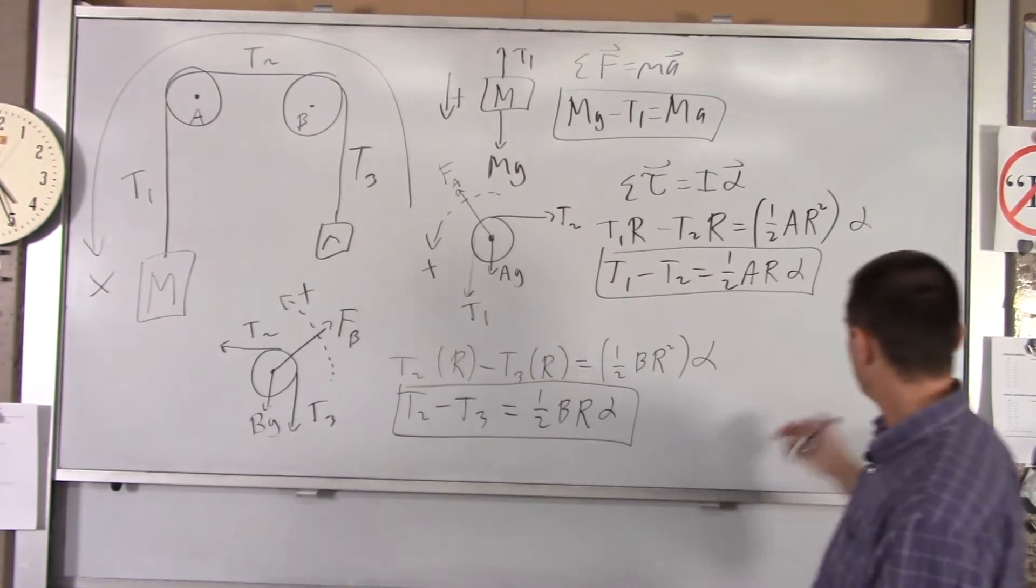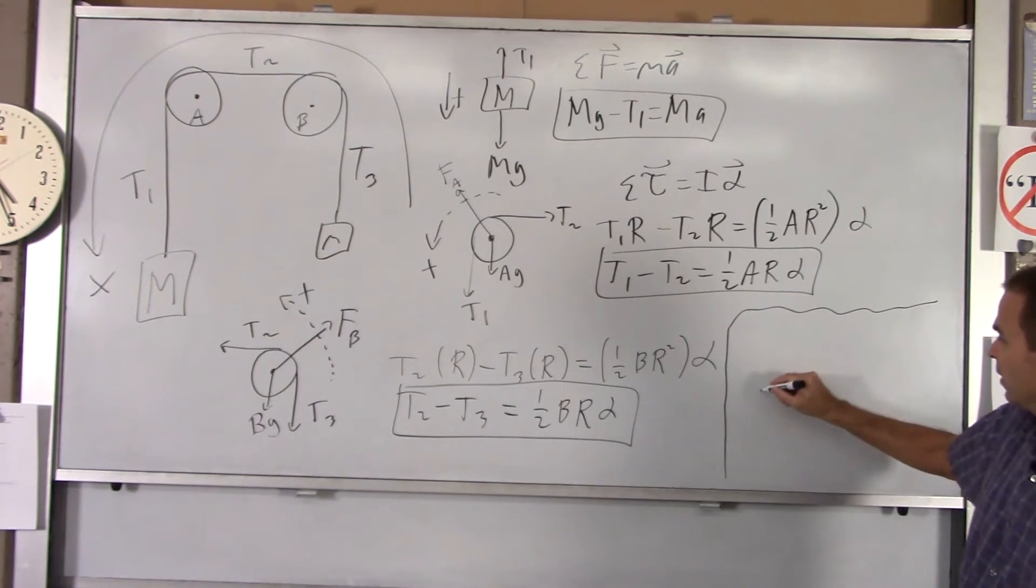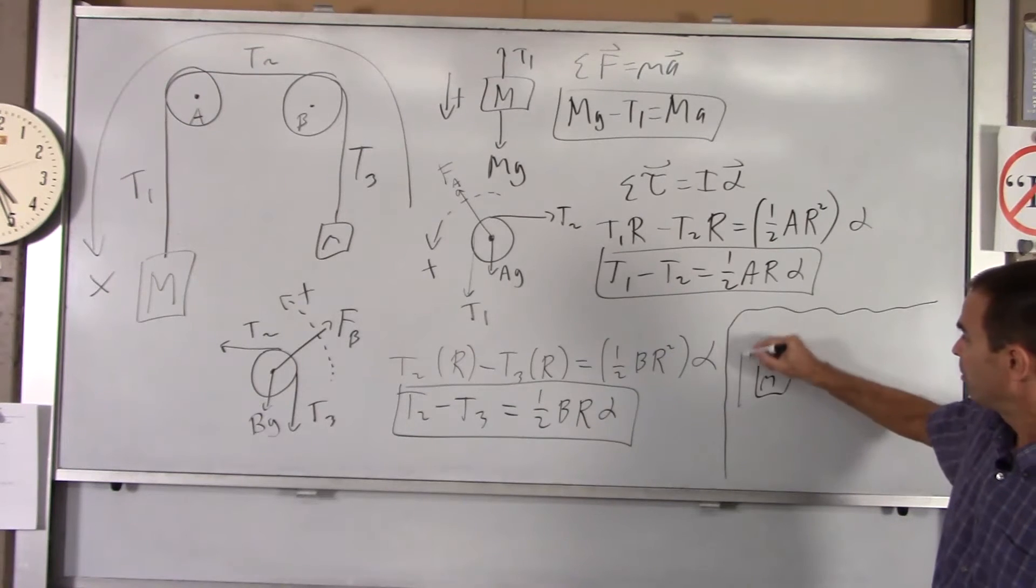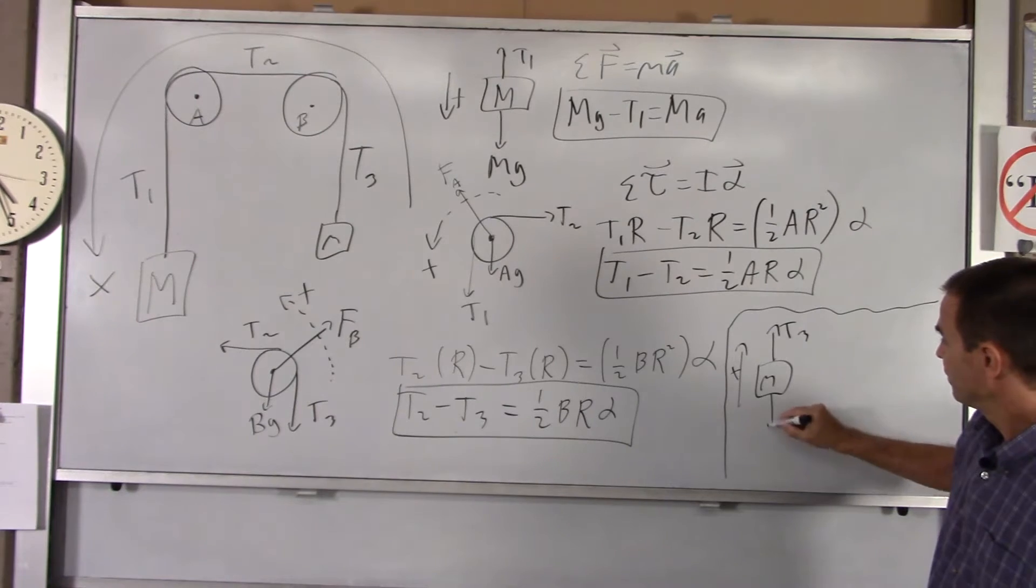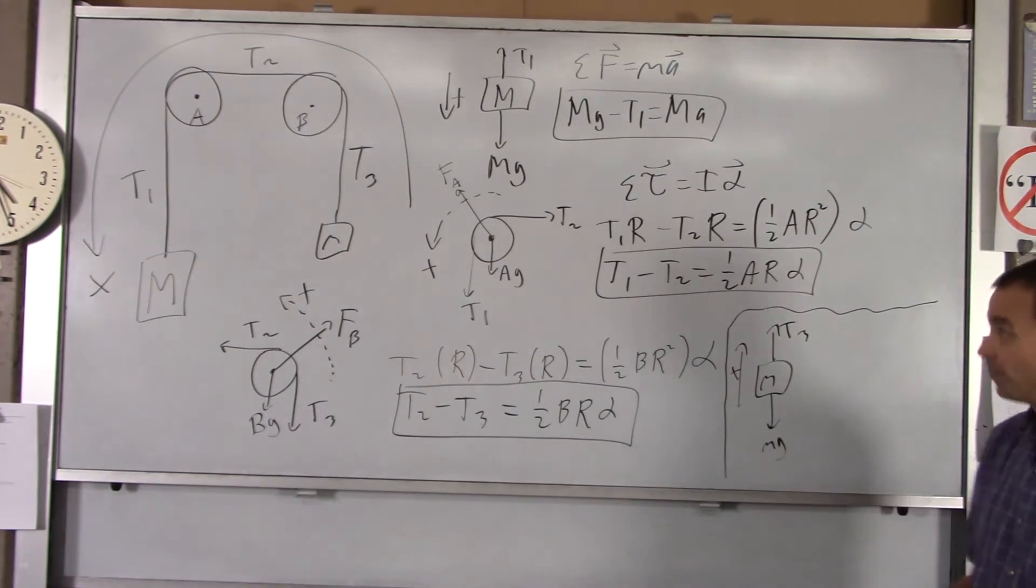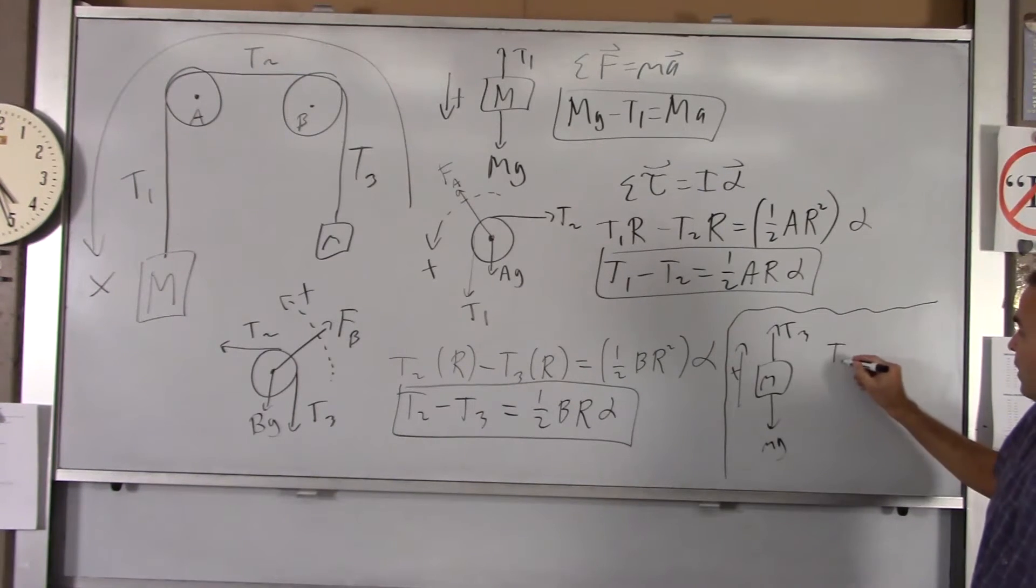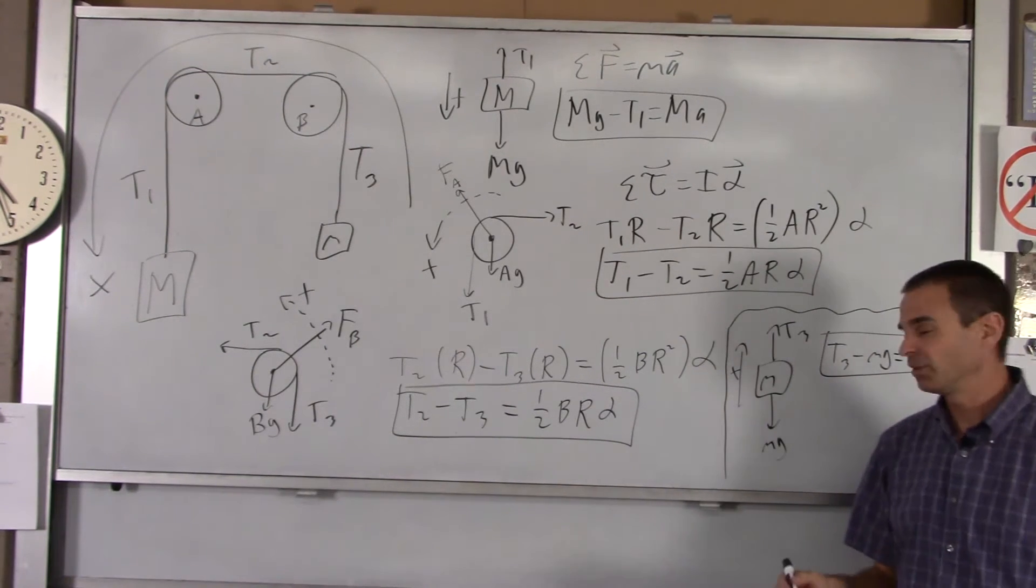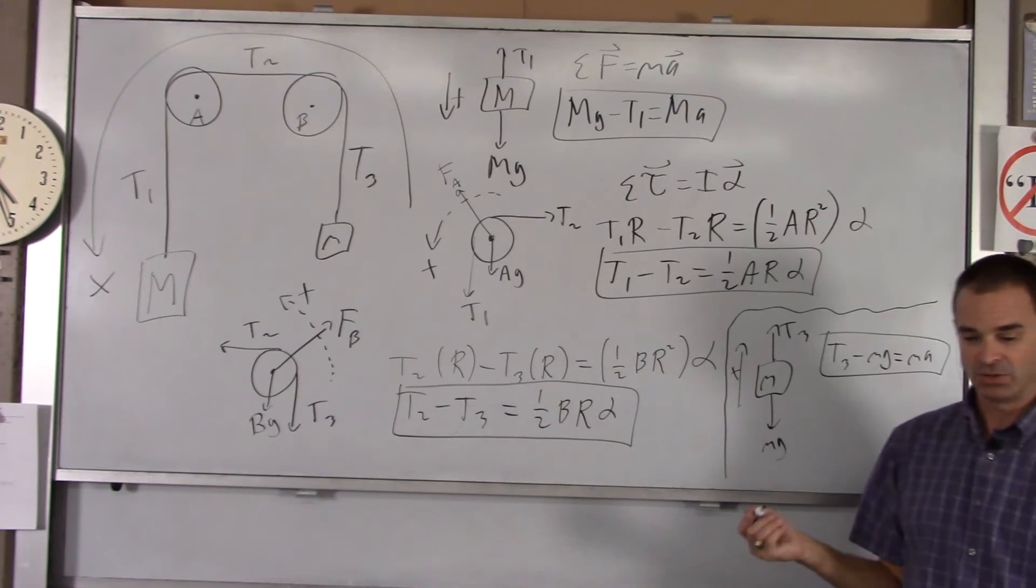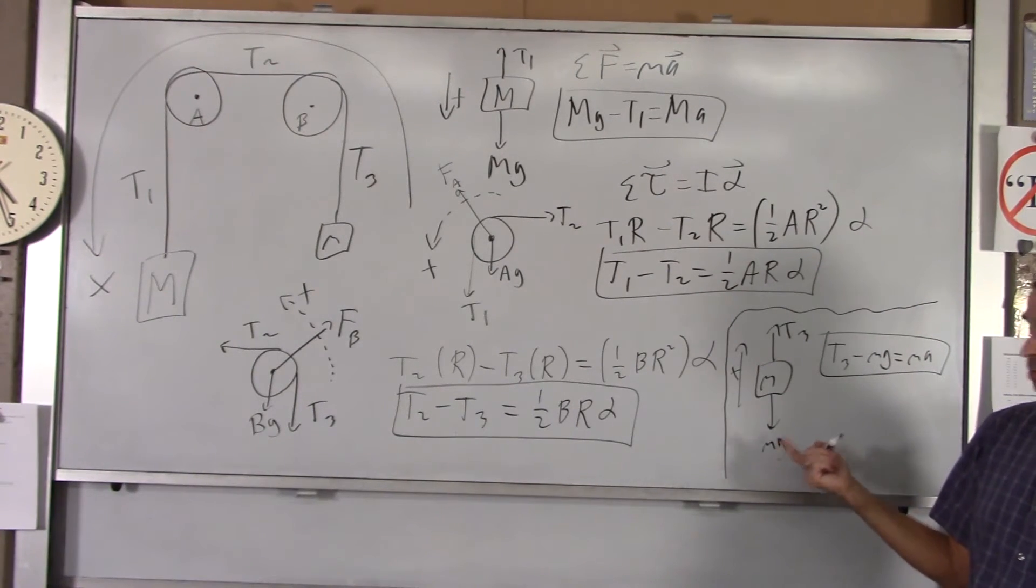Let's now do the little block. You've got a little guy. For him, up is positive. He has T3 acting on him and little mg acting on him. If I do Newton's second law on him, up being positive, you get T3 minus little mg equals little ma. That's good news. We've got a fourth equation but have not introduced any new unknowns. But we need a fifth equation. We've got five unknowns but only four equations.